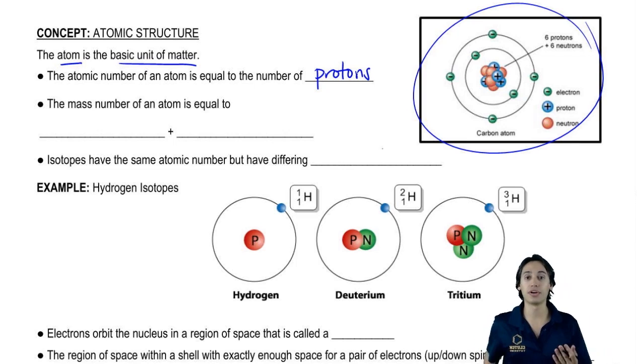So basically the atomic number is really what differentiates all the atoms. We say that an atom is one atom or another based on how many protons it has.